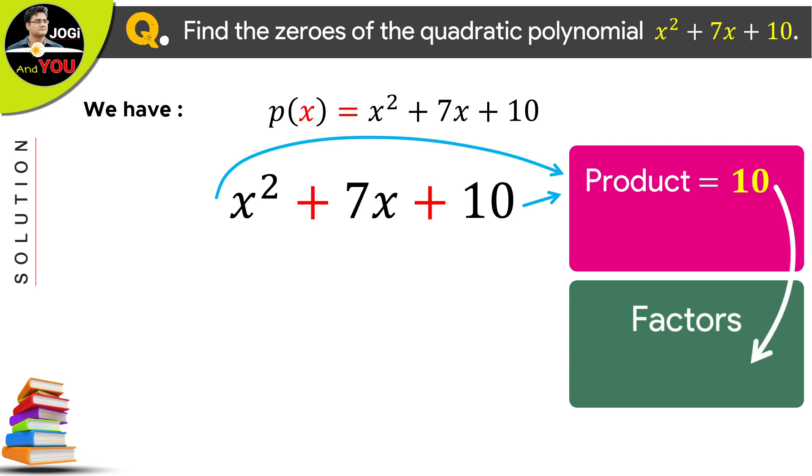Now, we will do such factors of 10 whose sum becomes equal to the numeric value of the middle term which is 7 here. And those factors would be 2 and 5.